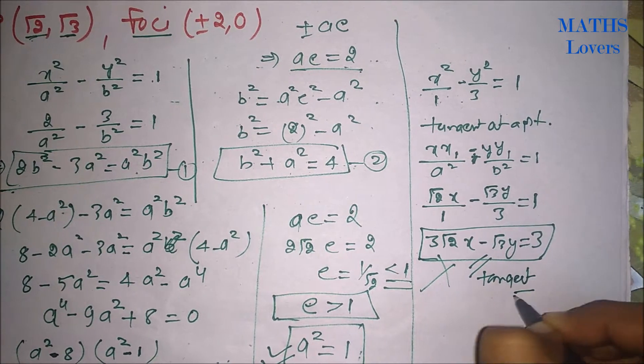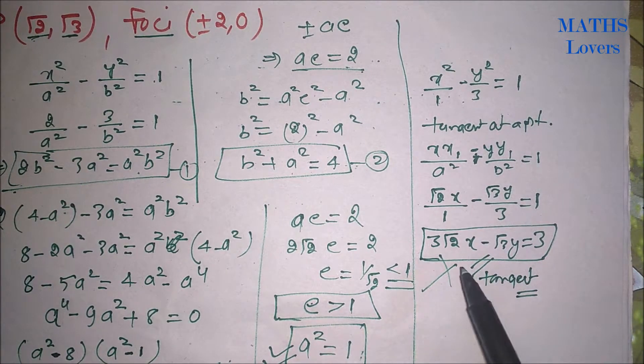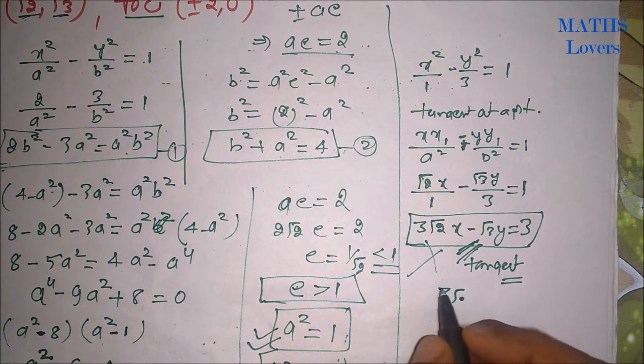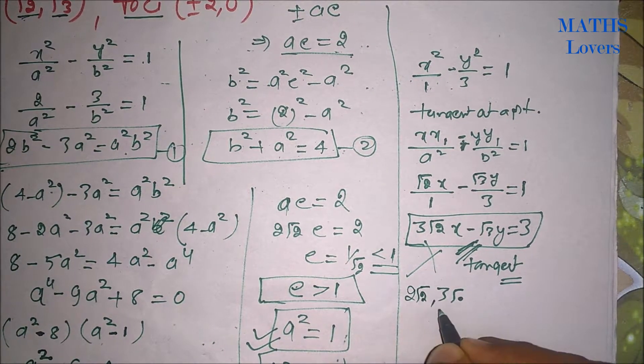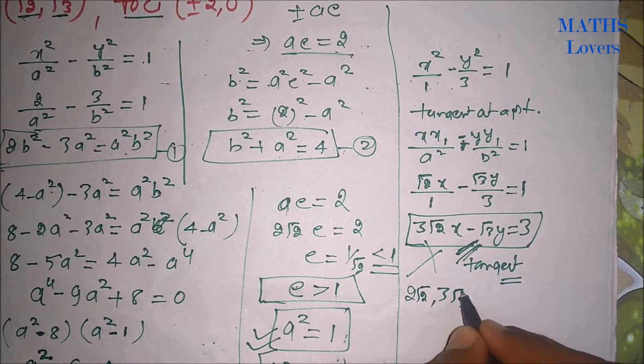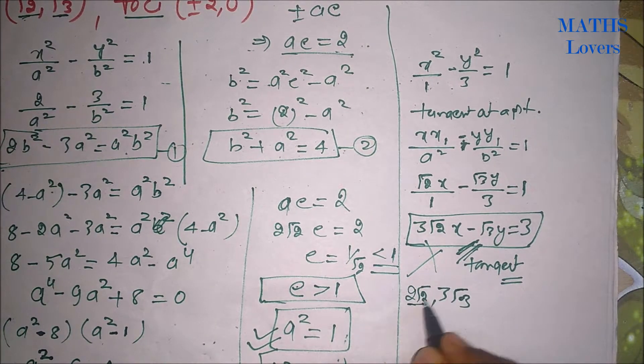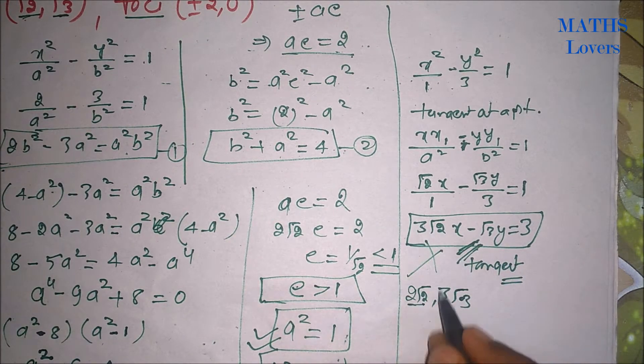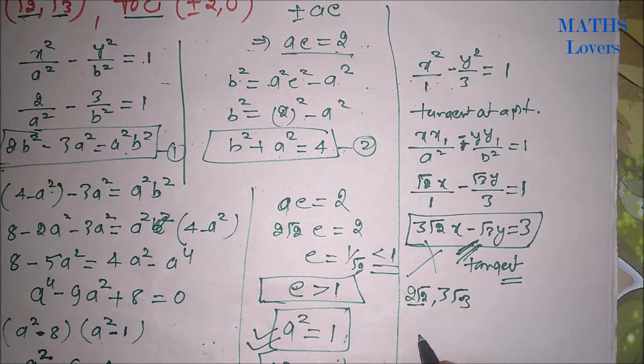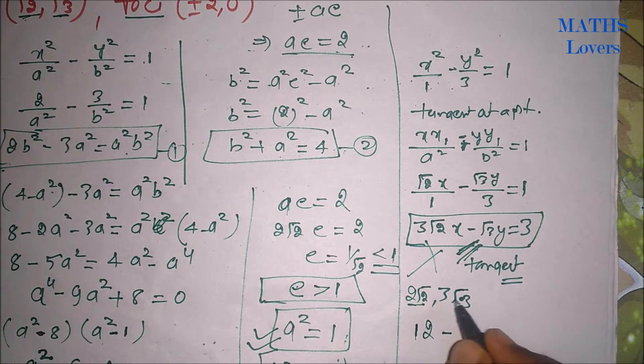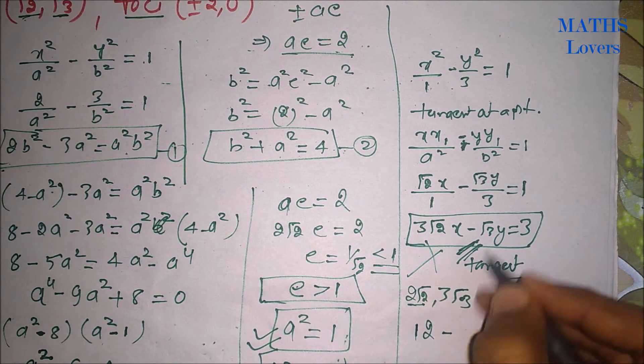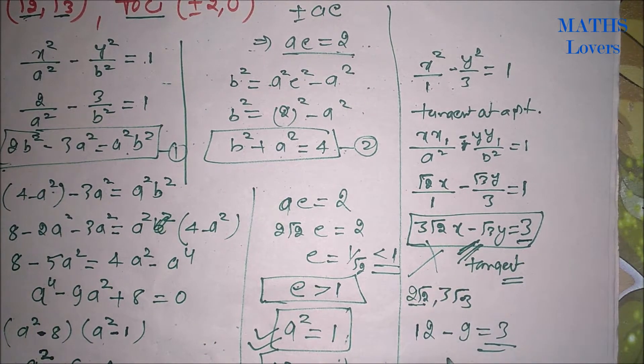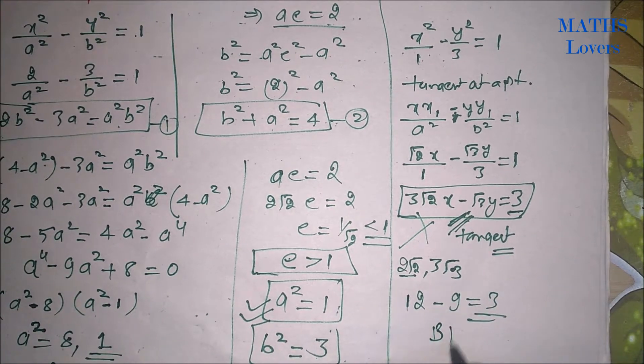Now, we can check all the points which one is lying on this line. When you check all the points, you will see that (2√2, 3√3) will be lying on it. We can check it here. If you put x equal to this, √2 × √2 will be 2, 3 × 2 is 6, 6 × 2 will be 12 - 3√3. We can multiply: 3 × 3 is 9, so it will be 3 and this equals 3. That's why B is our answer.